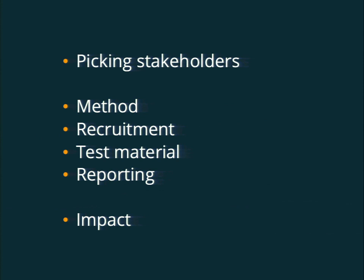I want to talk about six parts you'll encounter when doing user research: how to pick the right stakeholders to be involved in the process, how to choose and communicate your method, your recruitment, and test material, and finally, how to report it in a way that actually has an impact on the organization — and then to figure out what impact all of those changes have.